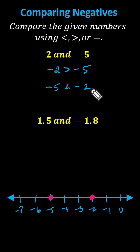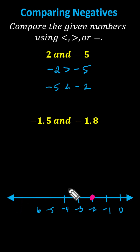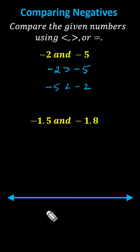Now let's compare negative 1 and 5 tenths, or negative 1.5, and negative 1.8, or negative 1 and 8 tenths. Going back to the number line, both decimal values are between negative 1 and negative 2. Negative 1 is greater than negative 2, so we'll label negative 1 on the right and negative 2 on the left.